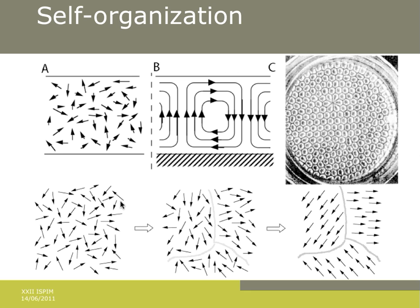First of all, self-organization. Self-organization is basically the reduction of friction and increase of synergy. The top figure here is part of the self-organization that happens in convection cells. In C and A and B, C is a top view and A and B are side views. What you see is a fluid that has self-organized into convection cells.